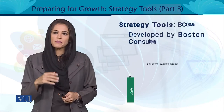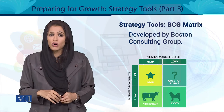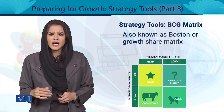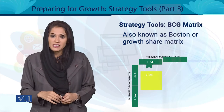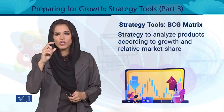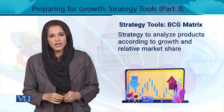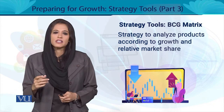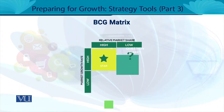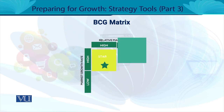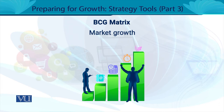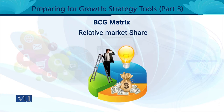First, we talk about the BCG matrix, which is developed by Boston Consulting Group — also called the Growth Share matrix. This is a strategic tool that helps you decide in which product and market to grow. If you look at the screen, you will see two yardsticks: one is the market growth rate and the other is the relative market share. You have 4 choices available for your product.